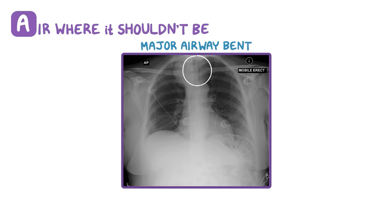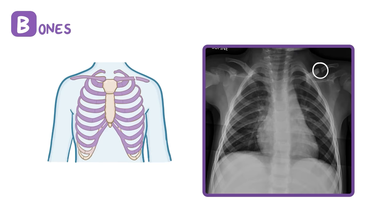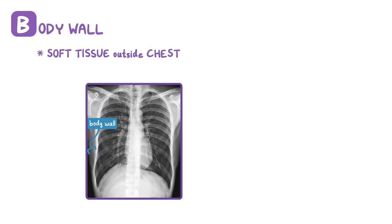B is for bones. Start by looking at both clavicles and all 12 pairs of ribs one at a time to make sure that there are no fractures, deformities, or missing bones. B is also for the body wall and soft tissues outside of the chest. This is an easily overlooked part of the chest x-ray, and it should be checked for swelling, masses, and other things.